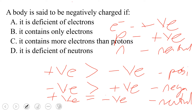Is it deficient of electrons? The answer is certainly no. When a body is deficient of electrons, such bodies are said to be positively charged and not negatively charged. So we cross out option A because that negates what is requested of us.